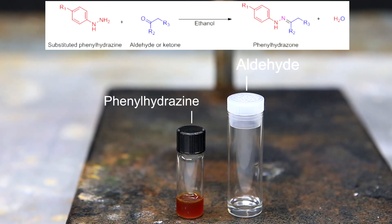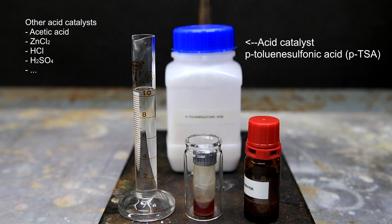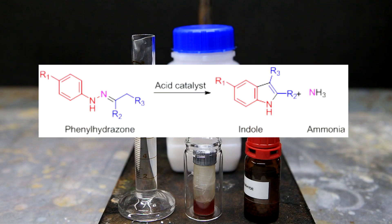The process starts with a molecule called phenylhydrazine, which is reacted with an aldehyde or a ketone to form a molecule called the phenylhydrazone. Using an acid catalyst, the phenylhydrazone will close in on itself and form a second ring. This new two-ringed molecule is known as an indole. By switching up what we put at different places on each of these molecules, we can make a variety of different indoles.